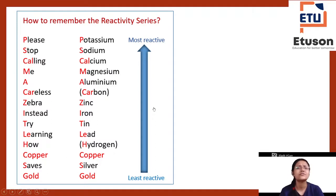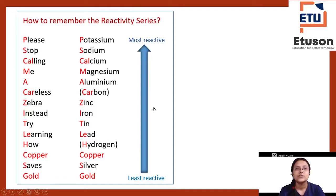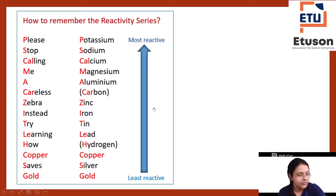So instead of just trying to remember Potassium, Sodium, Calcium, Magnesium, Aluminium, Zinc, Iron in order, you can learn them through this mnemonic in an interesting way. From the first letter of each word in 'Please Stop Calling Me A Careless Zebra, Instead Try Learning How Copper Saves Gold,' you can write the corresponding elements — P for Potassium, C for Carbon, and so on.